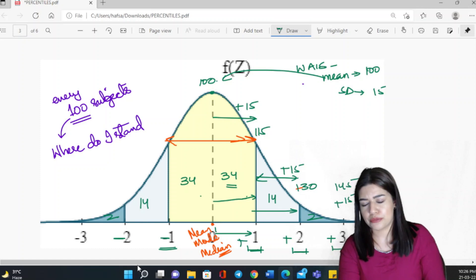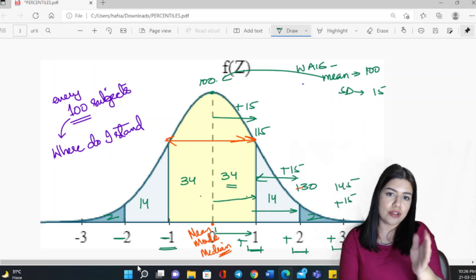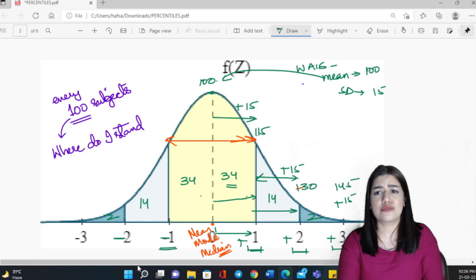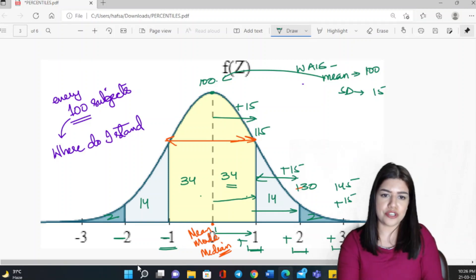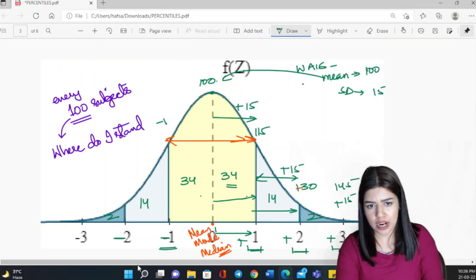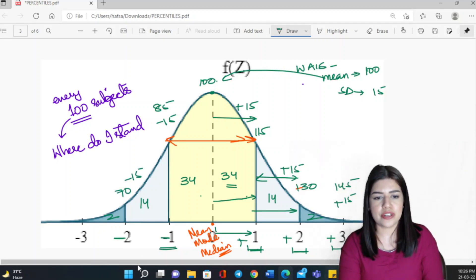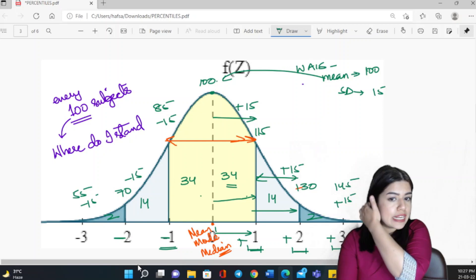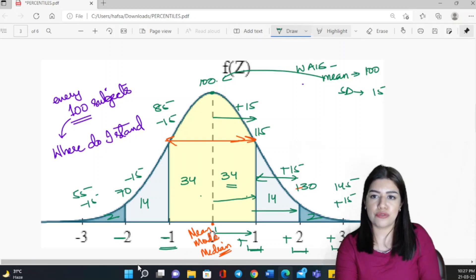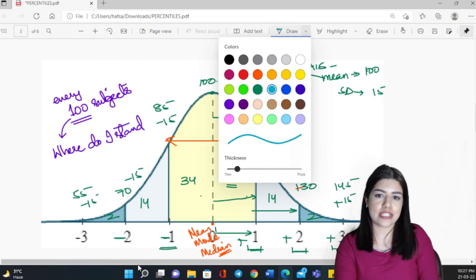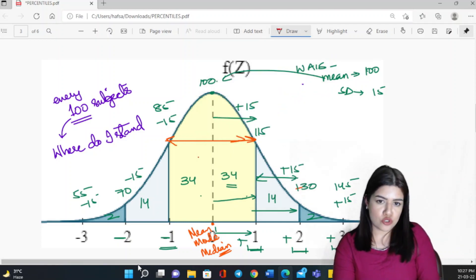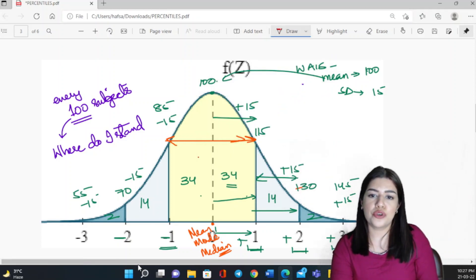When you move on to the left side here, you will simply just have to subtract 15 each time you cross a class interval or when you reach a particular standard deviation. So here I simply subtract 15 and I get 85. I subtract another 15 and I get a score of 70. I subtract another 15 and I get a score of 55. Now see, you would easily be able to tell me, remember the 34, remember the 14, and remember the two.